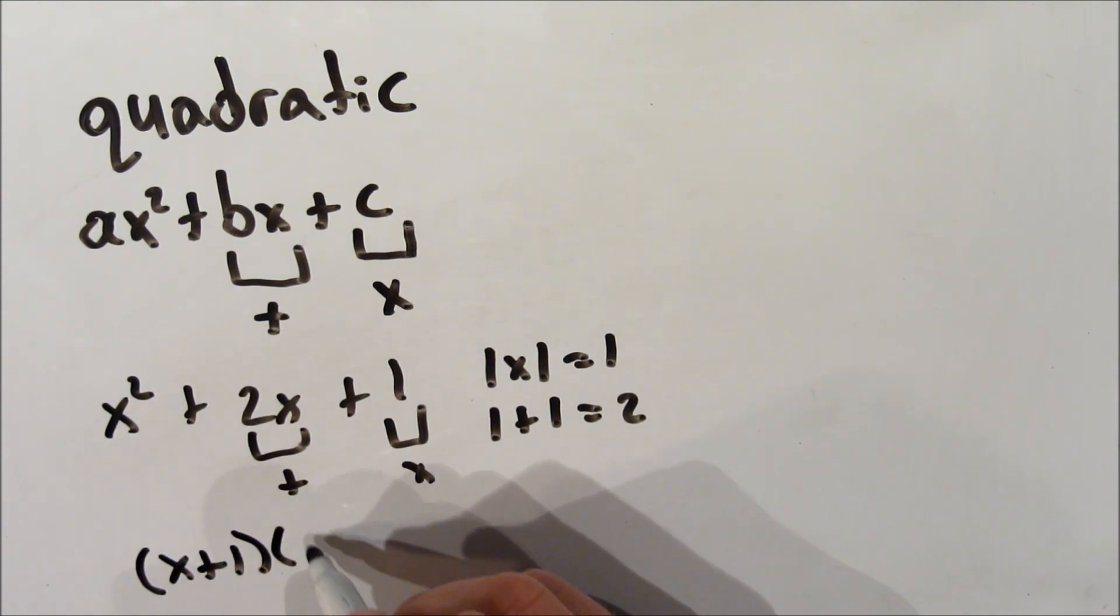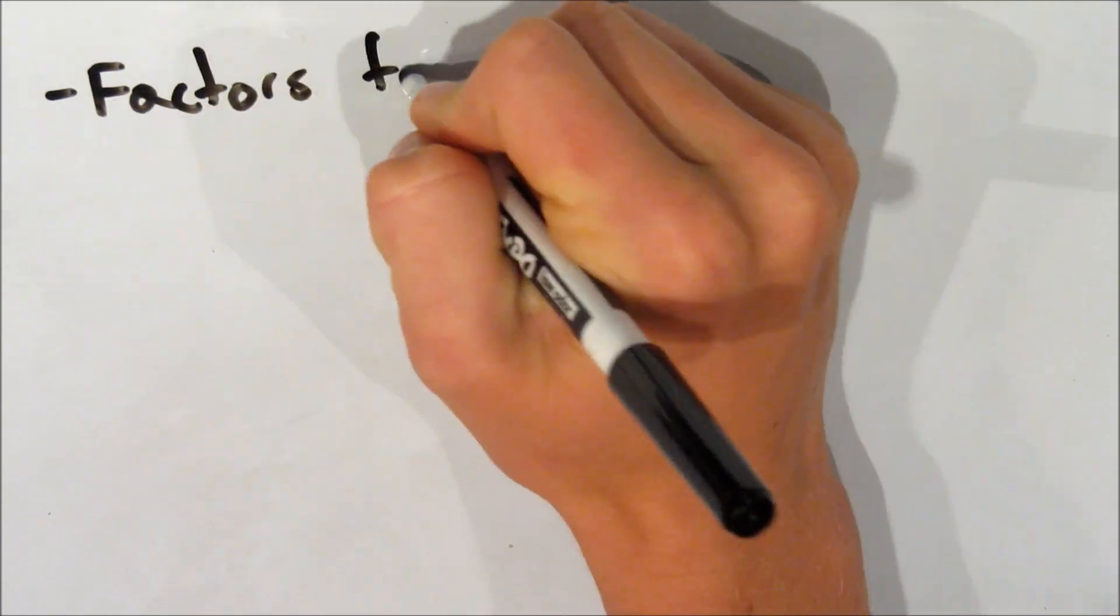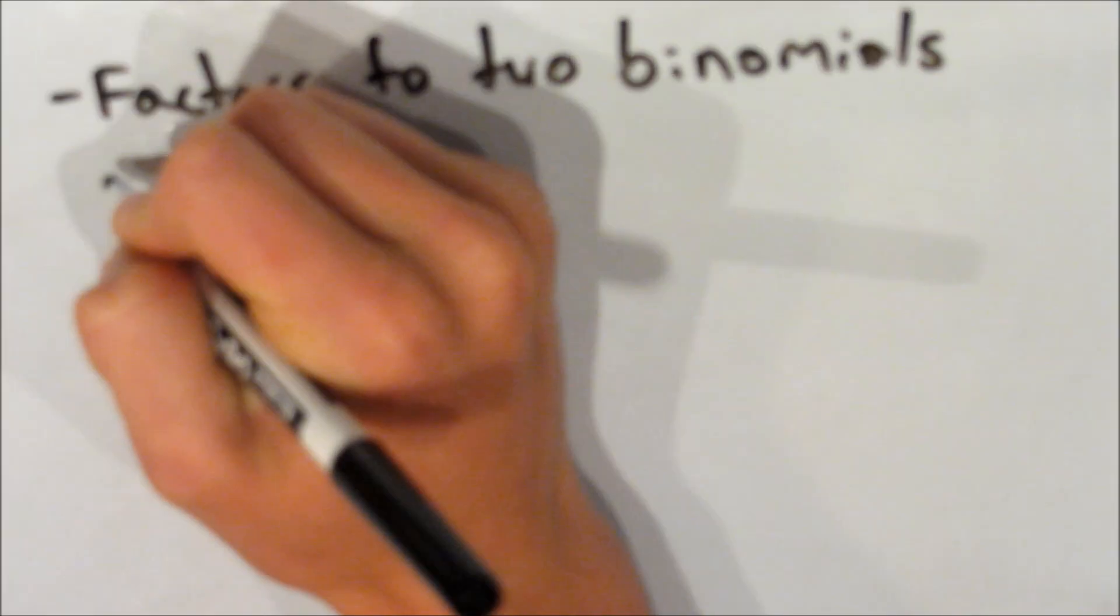So now, we can jump right in and write it down. Two binomials, each of them is x plus 1. In this case, we know that you could just put those together and make it x plus 1 squared, but I left it expanded just for the sake of the video.